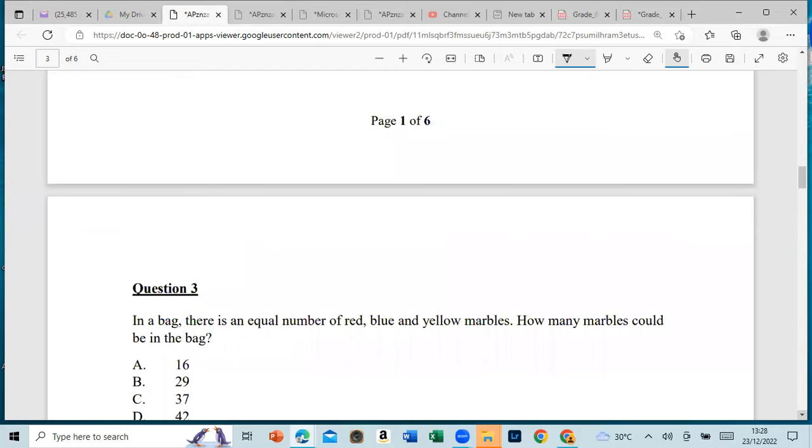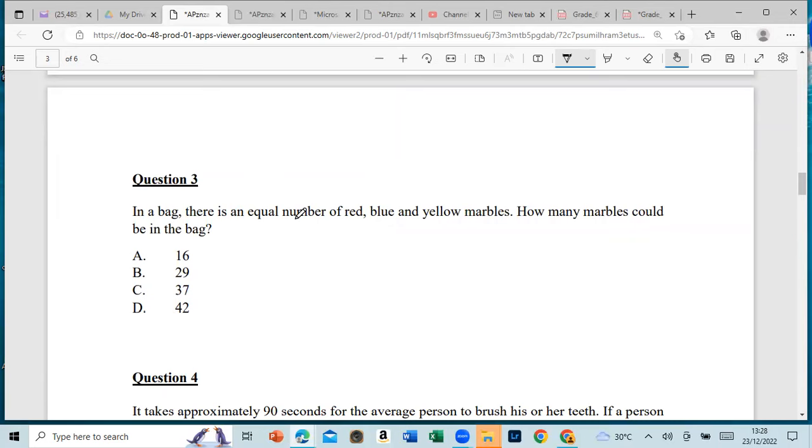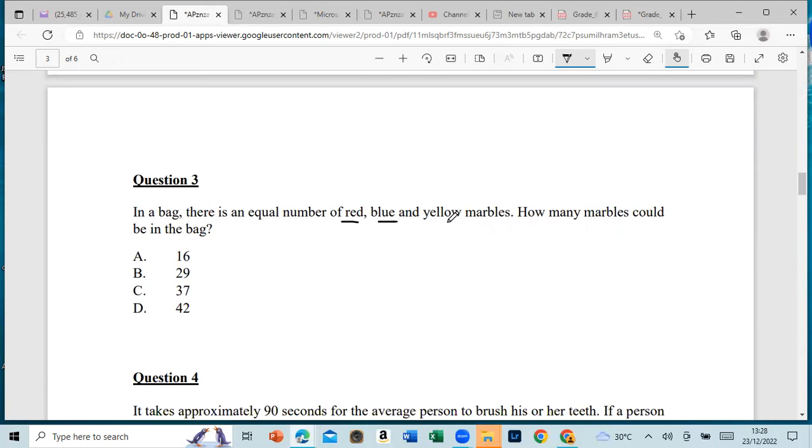Let's move on to question 3. In a bag, there is an equal number of red, blue, and yellow marbles. How many marbles could be in the bag? It can't be 16 because 3 cannot go into 16, cannot go into 29, cannot go into 37. So it should be 42. It has to be a multiple of 3, and 42 is a multiple of 3.